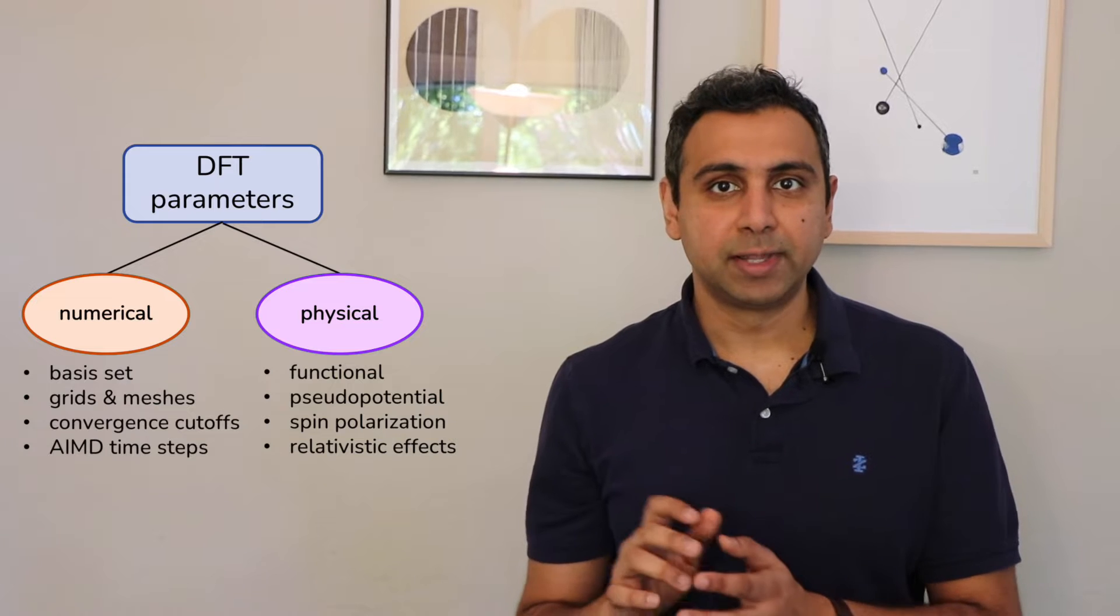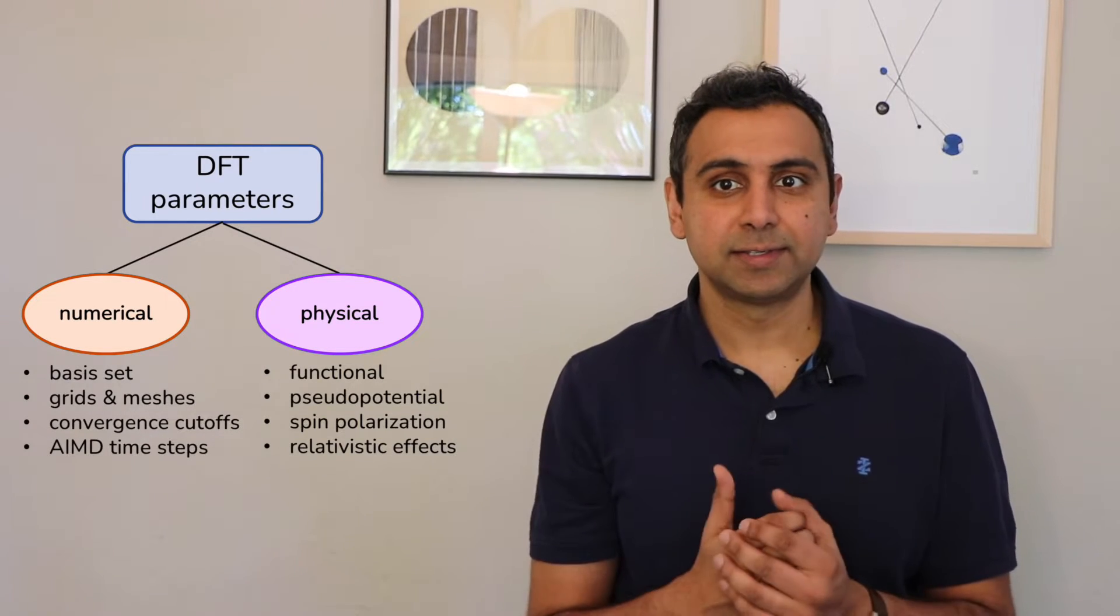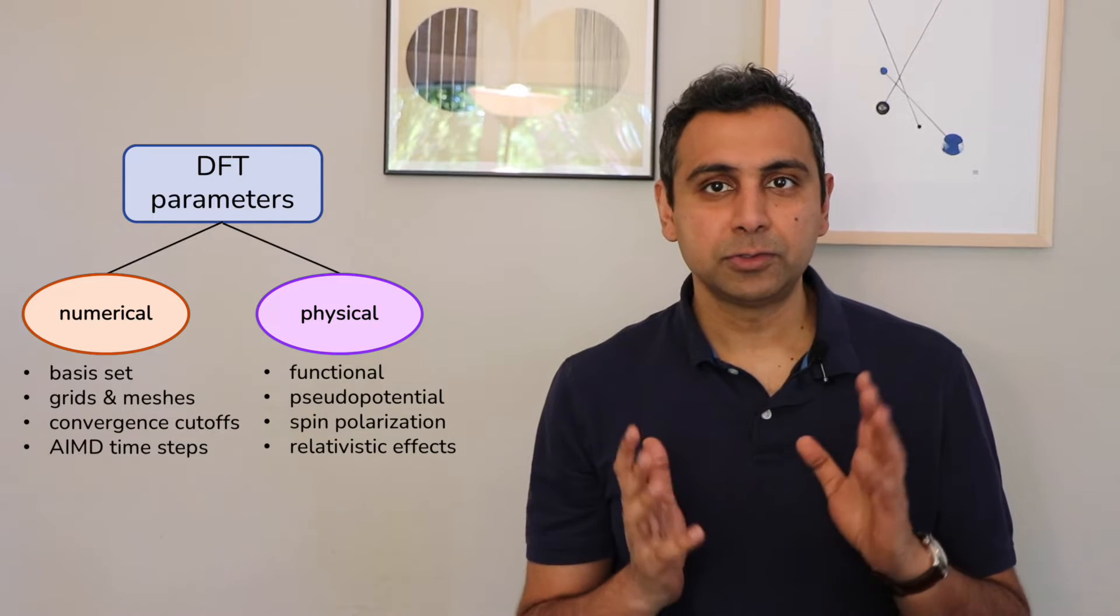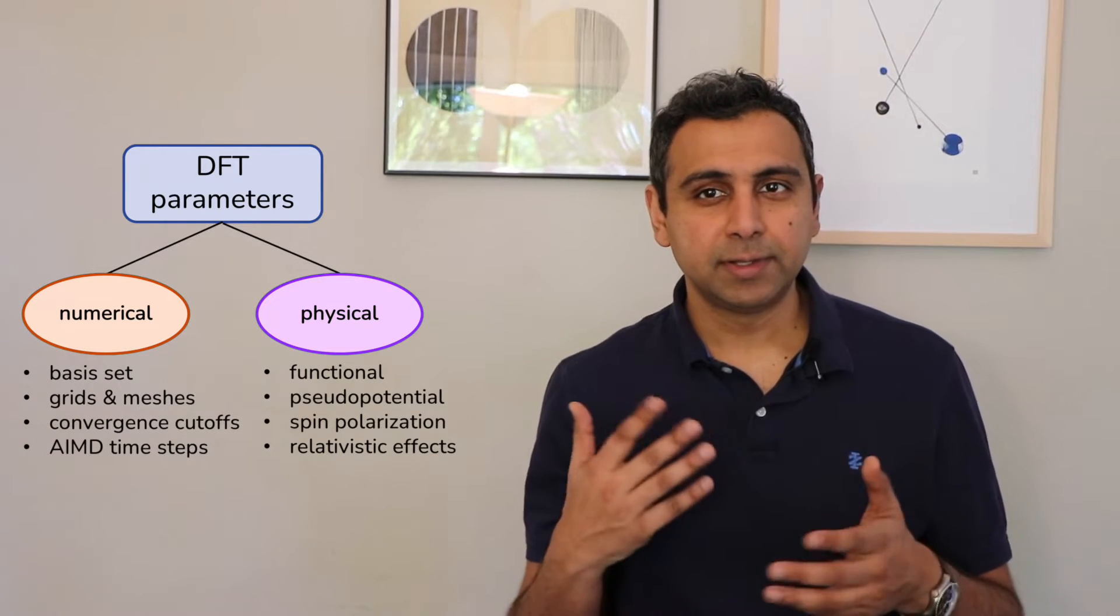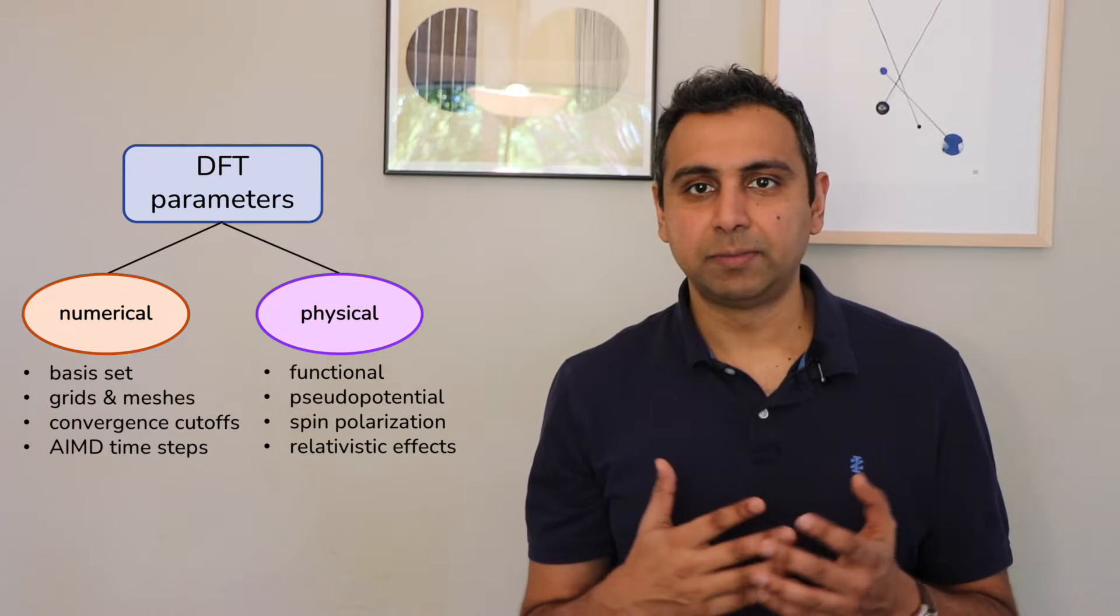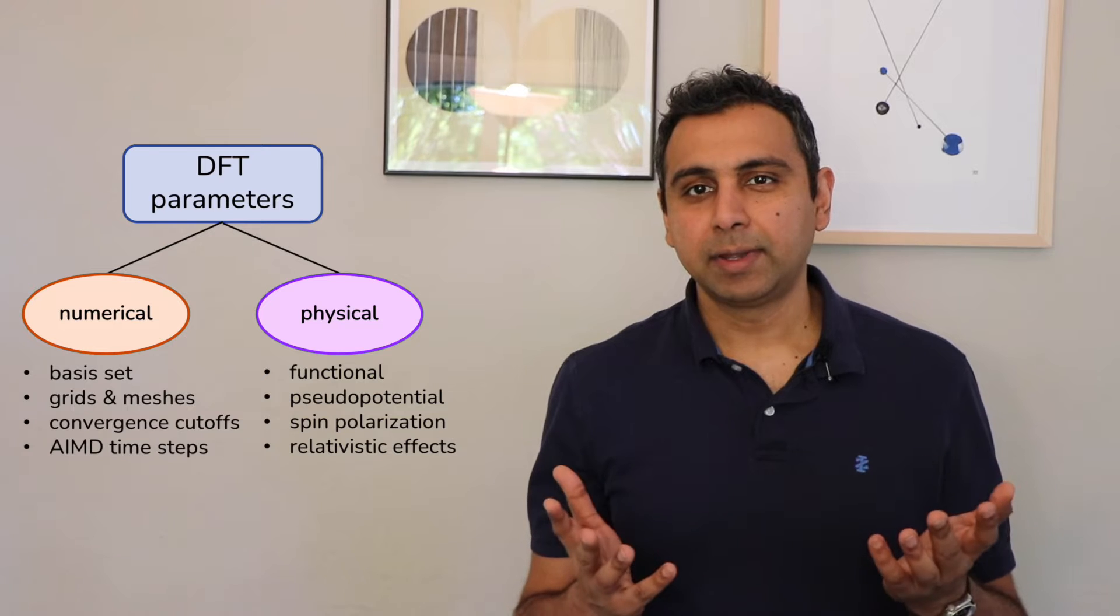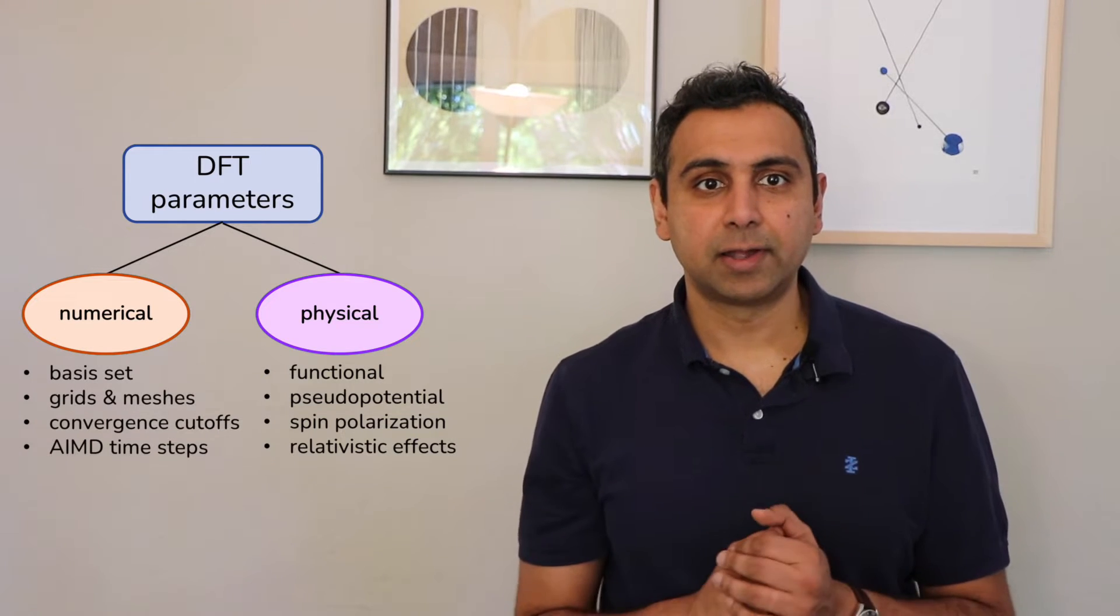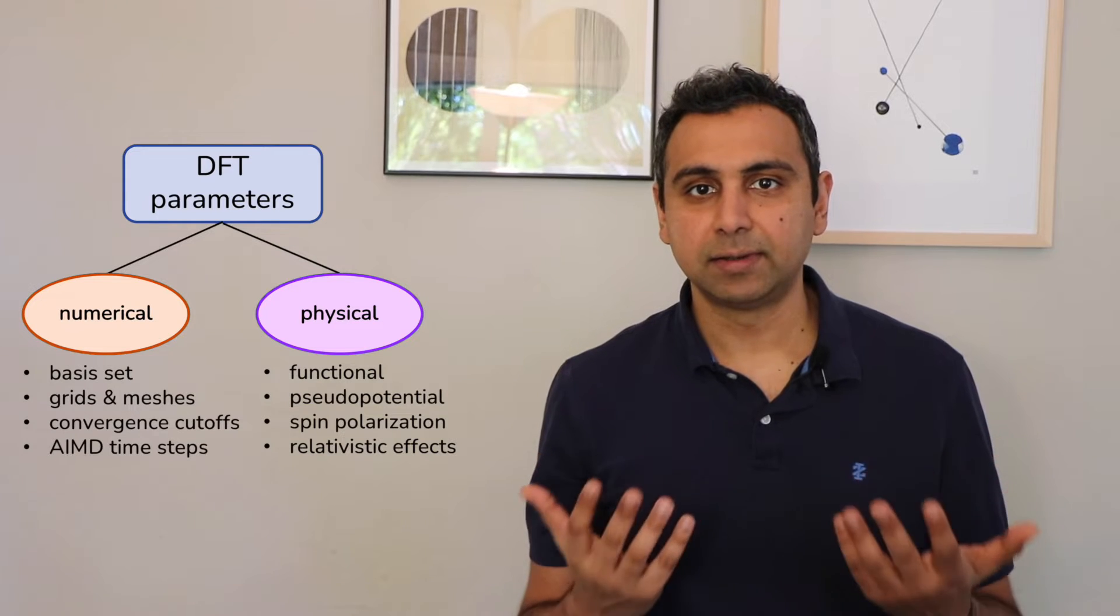The other type of parameter is related to the numerical accuracy, and this is the number of reliable decimal points in your solution, and you can usually get more numerical accuracy at the expense of computer time. So we won't go into these parameters, but examples include your basis set and some numerical grids and meshes. So here you want to be careful enough to have enough precision in your calculation to give you reliable results, but not so much that you're just wasting computer time.